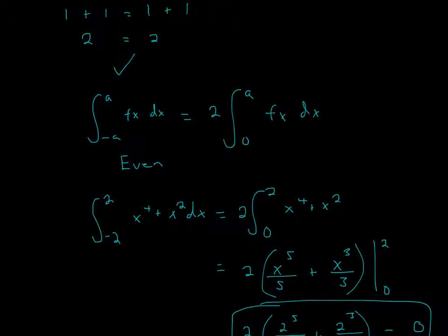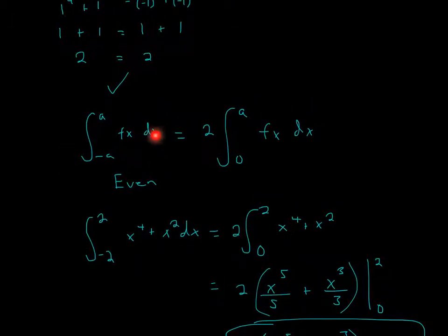So now, since we know it's an even function, the actual definition for an integral of an even function will be this. If you have the same number, one of them is positive, one of them is negative of a function, it's the same as 2 times one of those numbers, this a, to 0.